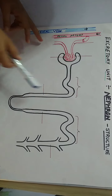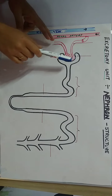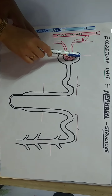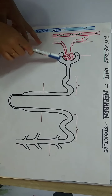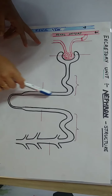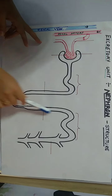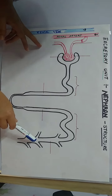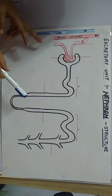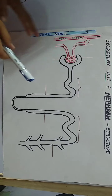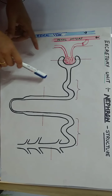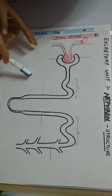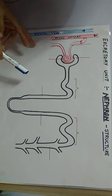We will study the parts of the nephron starting from the cup-shaped part and this tube-like structure that ends here. First, I will show you where these excretory units — nephrons — are located exactly in the kidney.